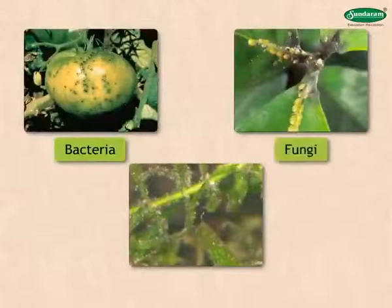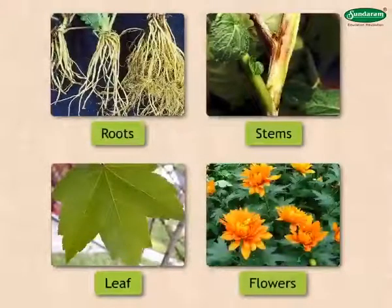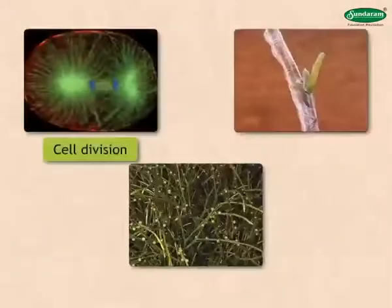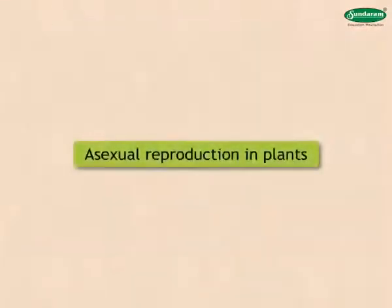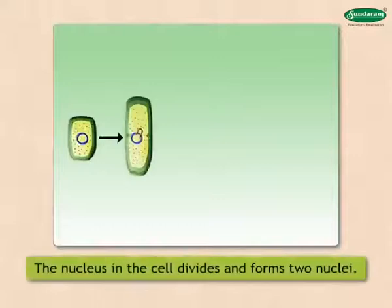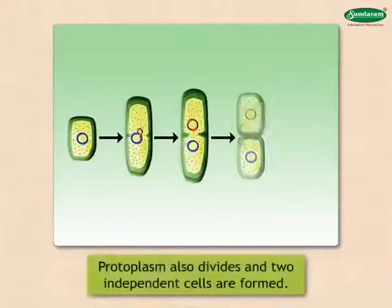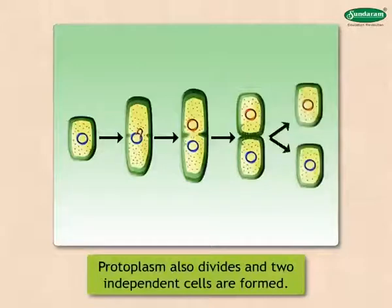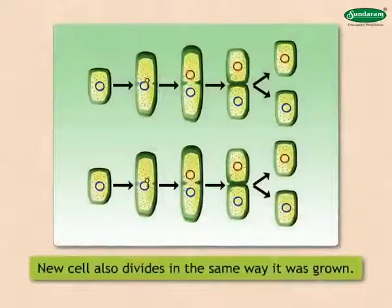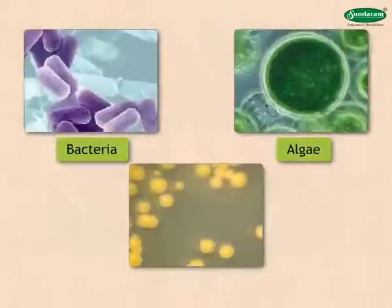Plants like bacteria, fungi, and algae do not have parts like the root, stem, leaf, and flower. These plants reproduce by means of cell division, budding, and sporogenesis. Unicellular living things reproduce by cell division. When the cell has grown, the nucleus in the cell divides and forms two nuclei. After that, the protoplasm also divides and two independent cells are formed. The new cell also divides in the same way. This kind of reproduction is seen in bacteria, algae, and chlorella.